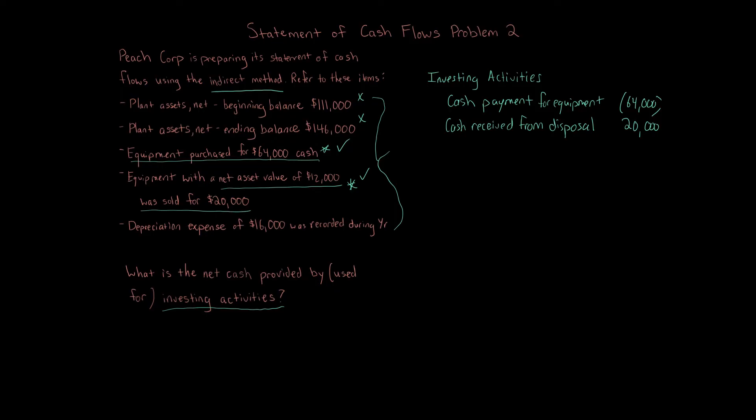So here, we're asked about investing activities. All we care about in investing activities is the $20,000 of cash that we receive. Because remember, cash received is what is key that we focus on. Yeah, we still do the gains and losses, but cash that we receive is $20,000. And then the next item, depreciation expense of $16,000 was recorded during year.